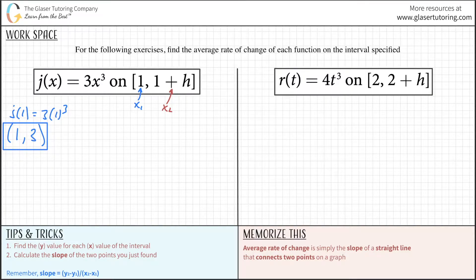Next, we need the second pair. Take the next x value and plug it in for x. So now we have j of 1 plus h. Sounds scary, but we follow the same rules. We're going to take 3 and plug in 1 plus h for x and cube it.